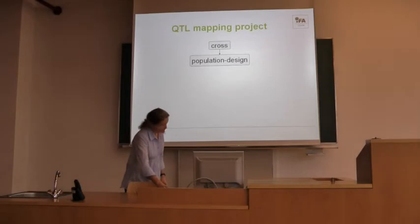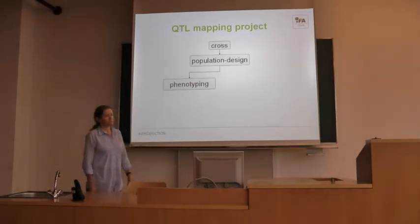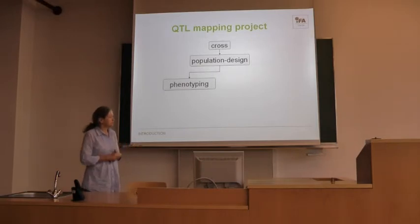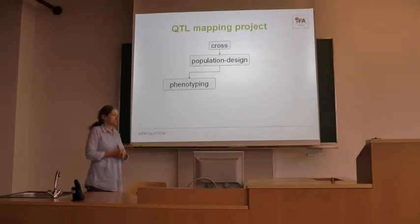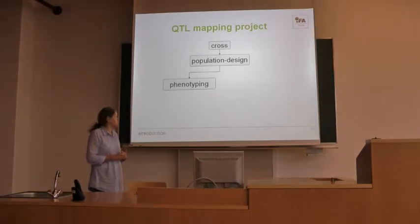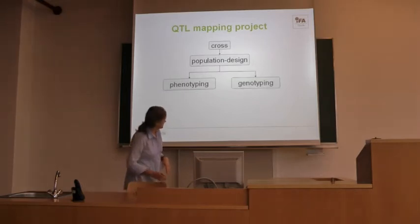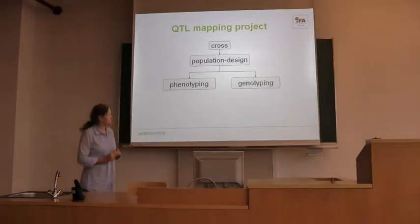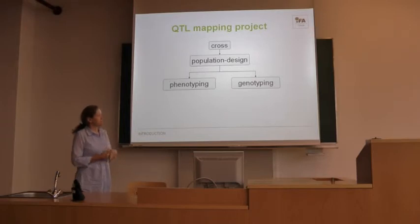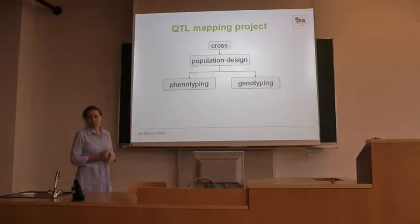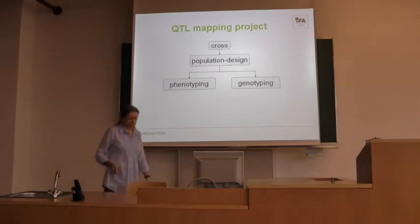Now you can start the project where you phenotype your material. This means you score your plants — the traits of your plants which are visible or measurable and which are relevant for the project. The same material is analyzed in the lab on the genetic layer, where you create genetic fingerprints of the lines by genotyping those lines with a certain number of markers.